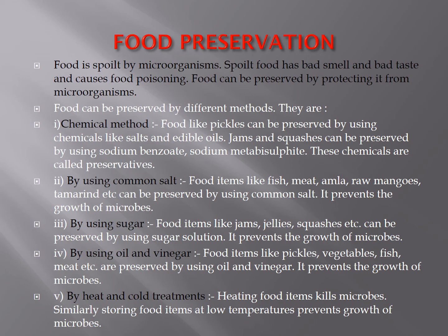By using sugar, food items like jams, jellies, and squashes can be preserved with a sugar solution, which prevents the growth of microbes. By using oil and vinegar, food items like pickles, vegetables, fish, and meat are preserved. By heat and cold treatment: heating food items kills microbes, and similarly, storing food at low temperature also prevents microbial growth — that is why we keep food items in the freezer.